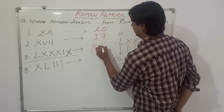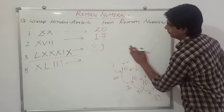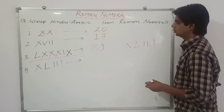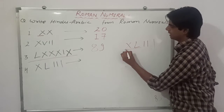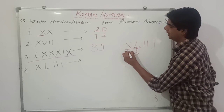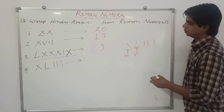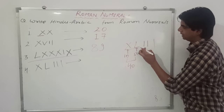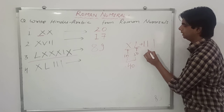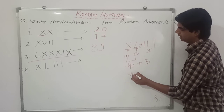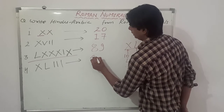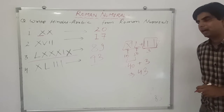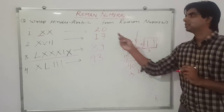So LXXXIX equals 89. Next is XLIII. X is to the left-hand side of L, and X is smaller than L, so it gets subtracted — that is 50 minus 10 equals 40. To the right it is I, I, I which is 3, and that gets added to 40, so the number is 43. Remember: a smaller symbol on the left gets subtracted, and on the right it gets added.